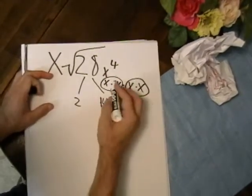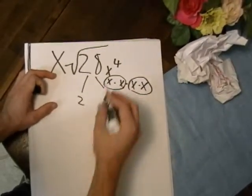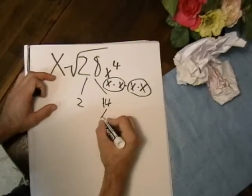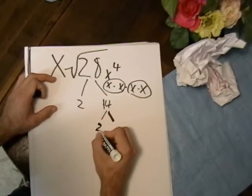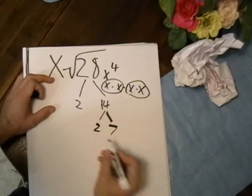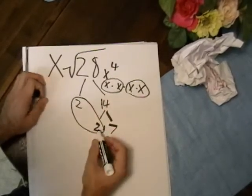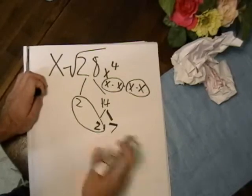And factors of x to the 4th would be x times x times x times x. We already know that we have 2 pairs. So we know that we'll be bringing x squared outside of here. But let's finish breaking down the numbers. 14, we can get 2 times 7. We notice that we have a pair of 2's. Here, 7 is alone.